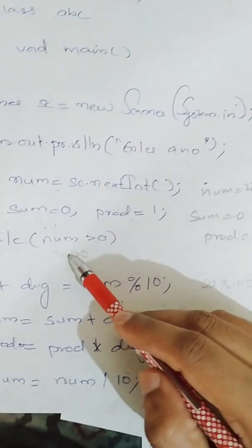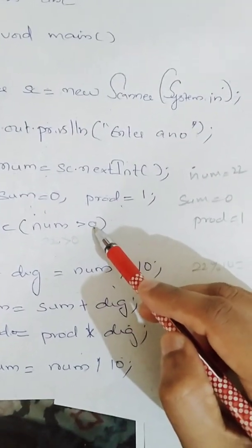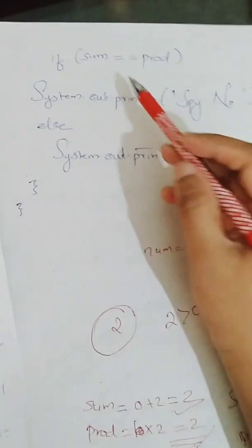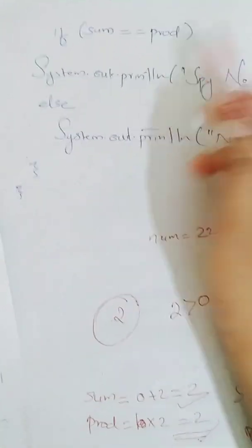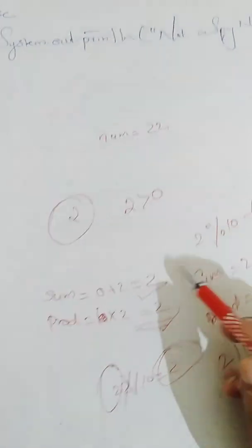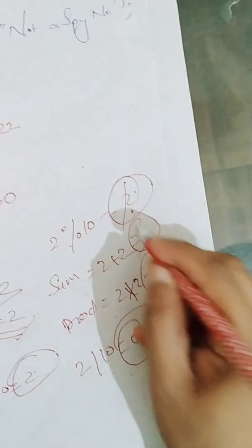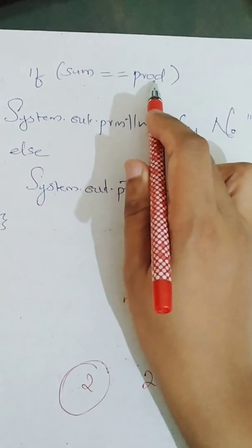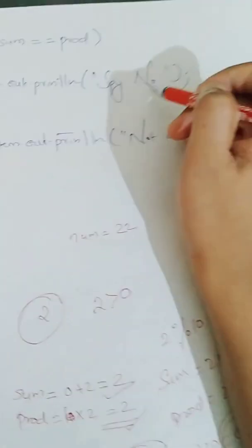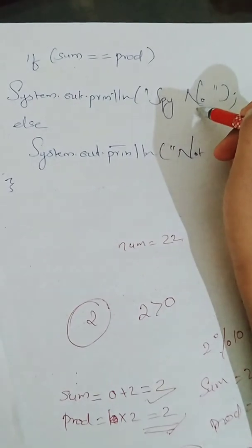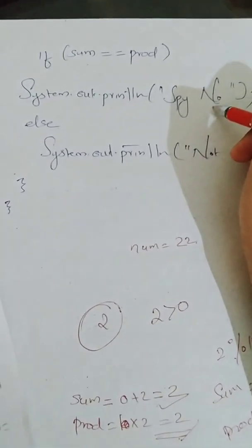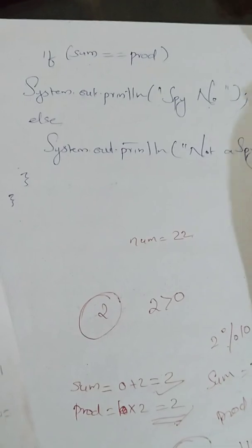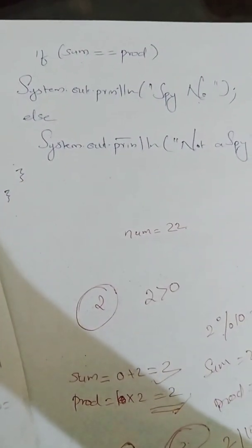So again it comes here, 0 greater than 0, false. So it will come out of the loop. Outside loop, it is checking is sum equal to equal to product. So it is checking your sum is now 4, product is 4. So 4 equal to equal to 4. Yes, it is true. So it will print that it's a spy number. 22 is a spy number. Thank you.